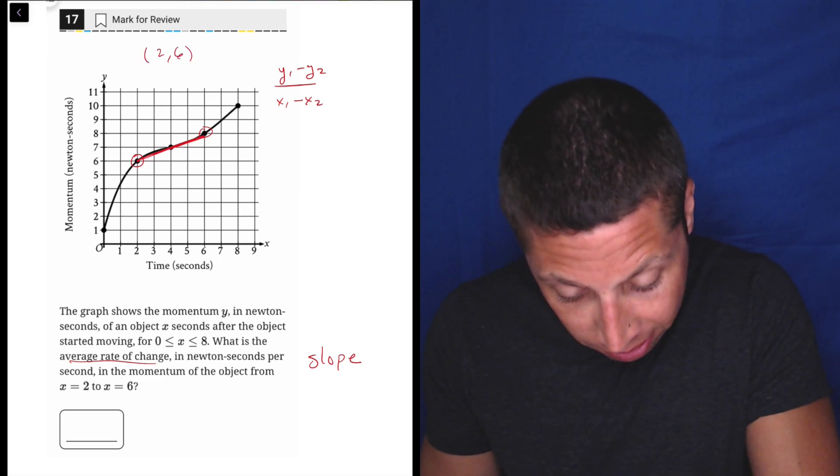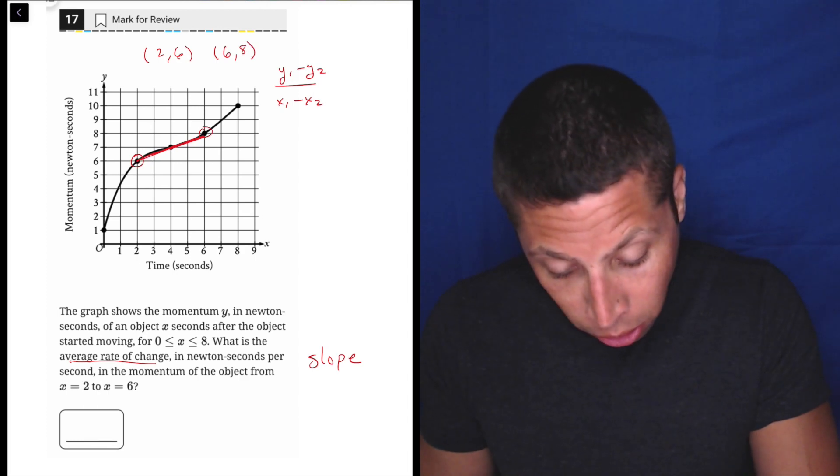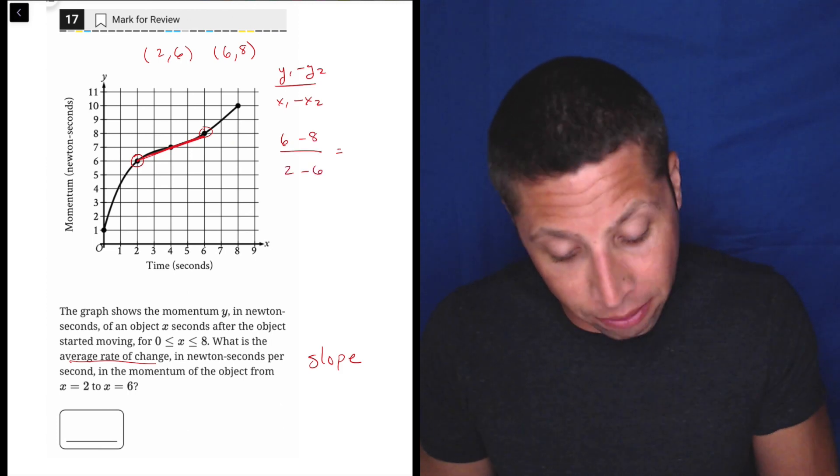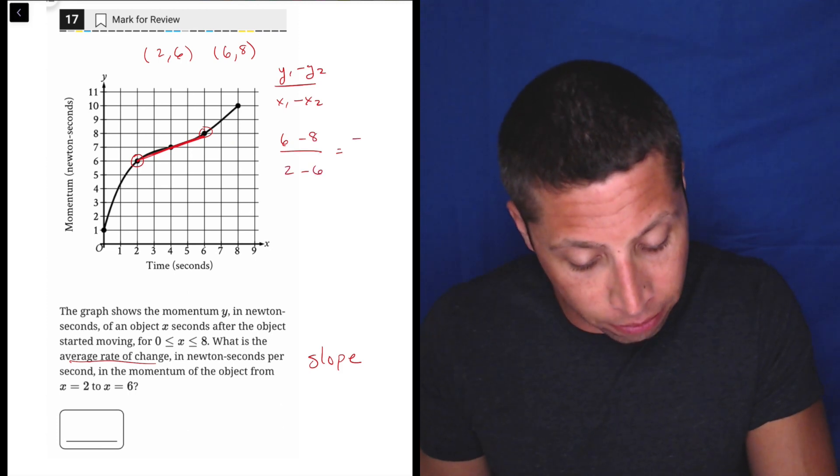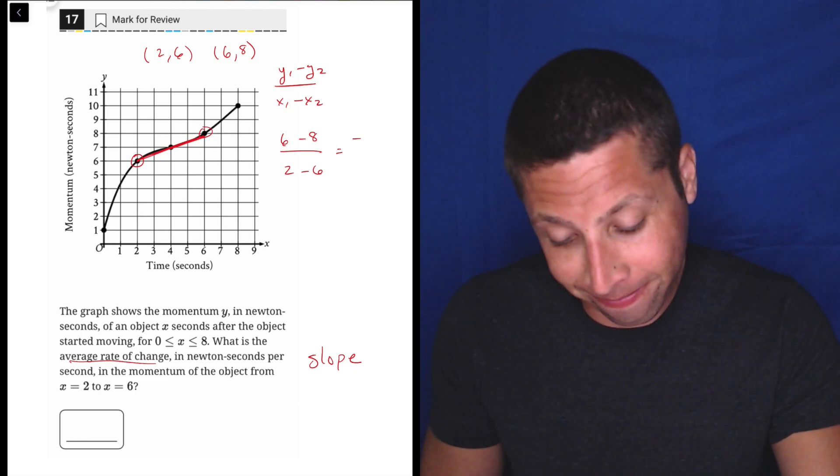Let's just be clear what the points are. It's (2, 6) and (6, 8). So I'm gonna do 6 minus 8 over 2 minus 6. I know that's gonna have some double negatives, that's fine.